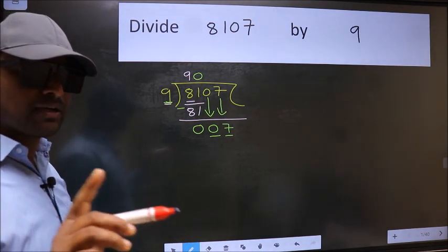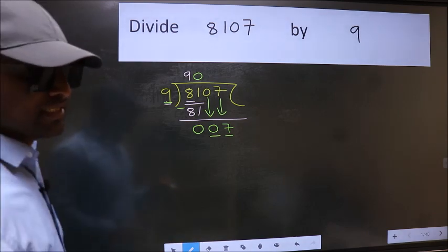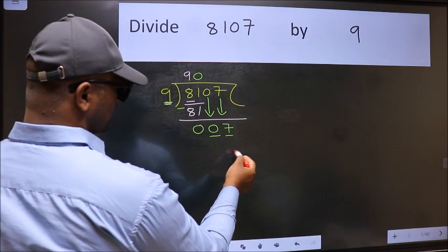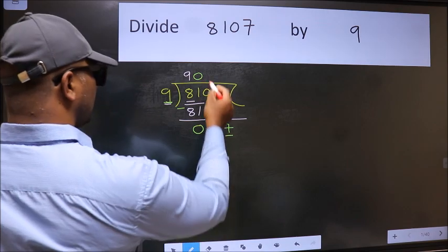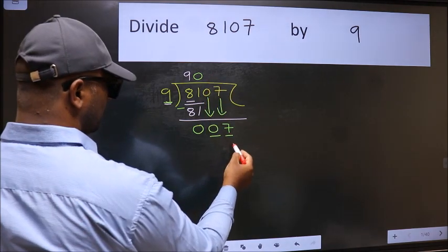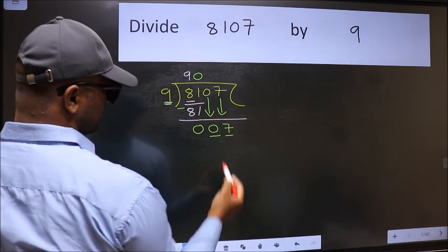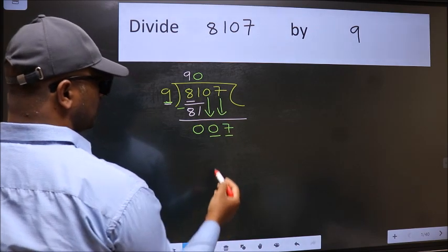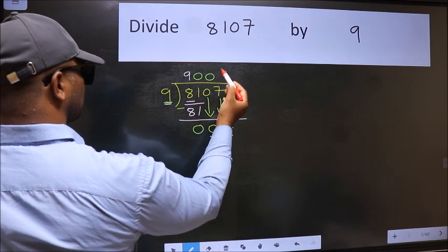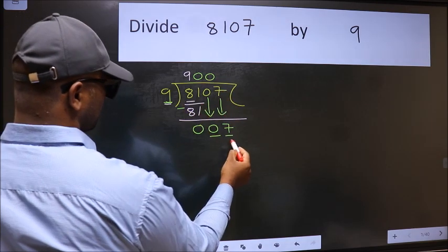Instead of that, what you should think of doing is which number should we take here? If I take 1, we will get 9. But 9 is larger than 7. So what we should do is we should take 0. So 9 into 0, 0.